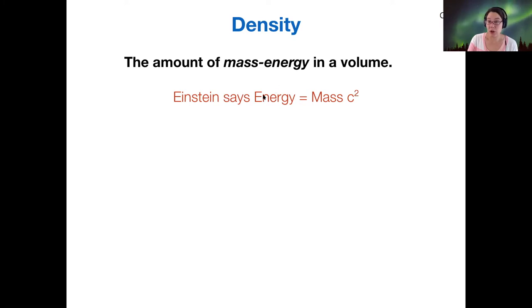And essentially it says that you can create energy given a certain amount of mass. It doesn't take a lot of mass to create lots of energy because the speed of light squared is a very, very big number.